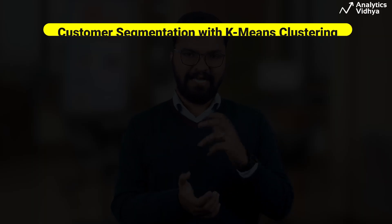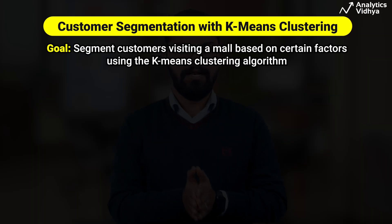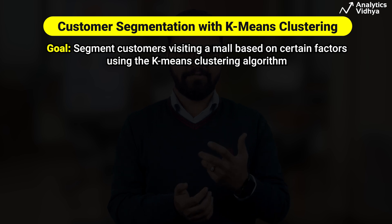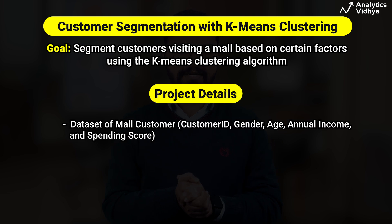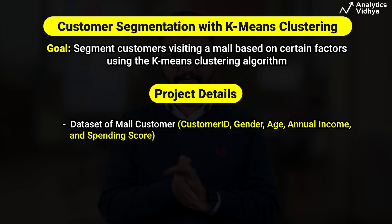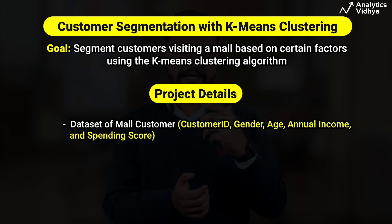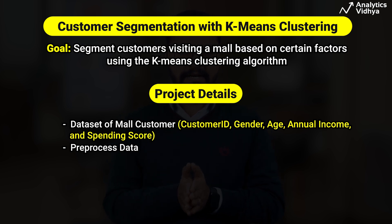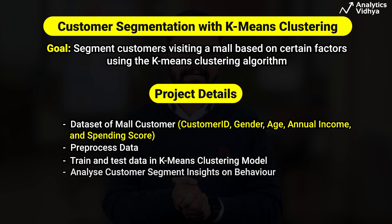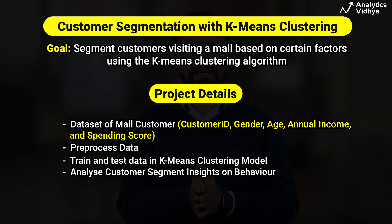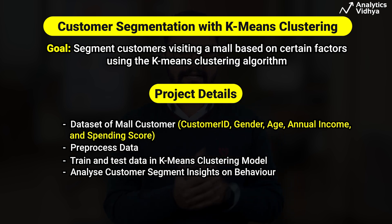The goal of this project is to segment customers visiting a mall based on factors like their annual income, spending habits, etc., using the K-Means clustering algorithm. We use the mall customer segmentation dataset containing five features. Next steps include preliminary research and data pre-processing. Once done, we train and test a K-Means clustering model to segment customers and analyze the segments to gain insights into customer behavior. This project helps in targeting customers with custom offers.